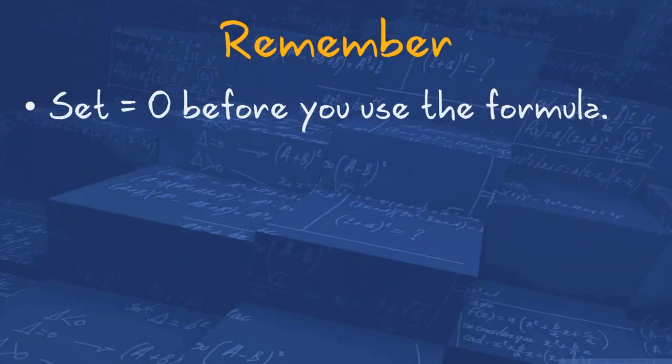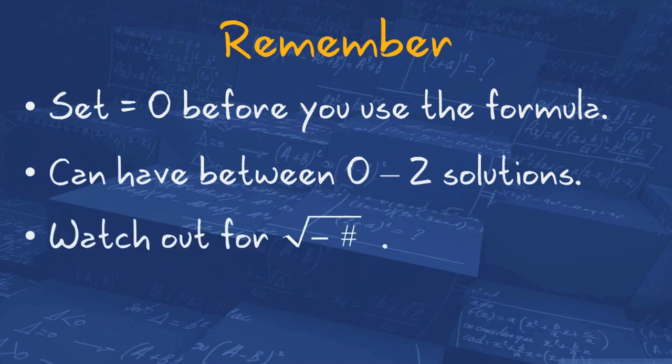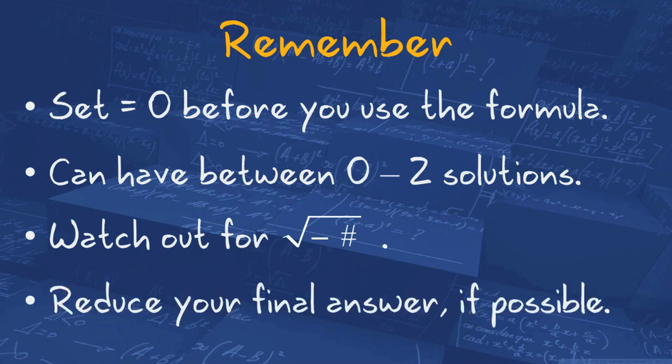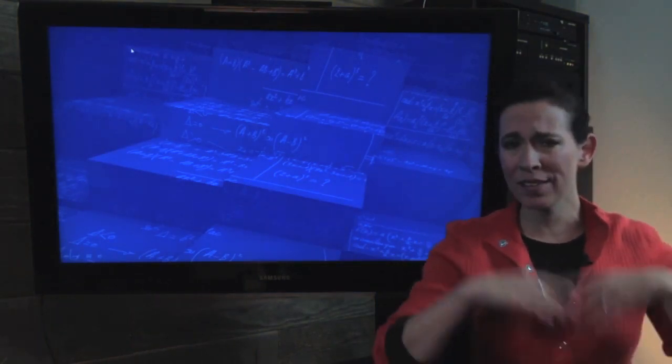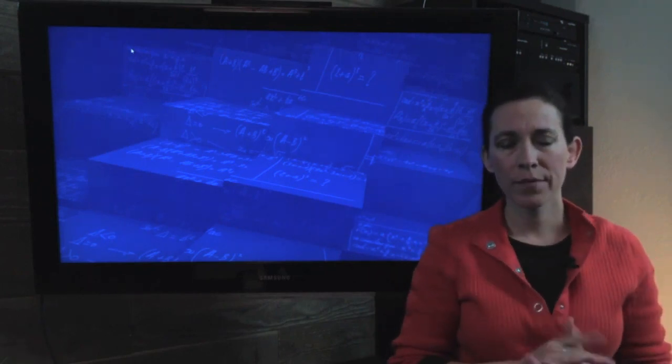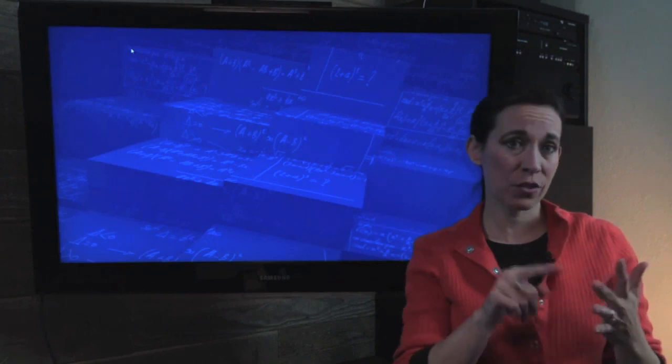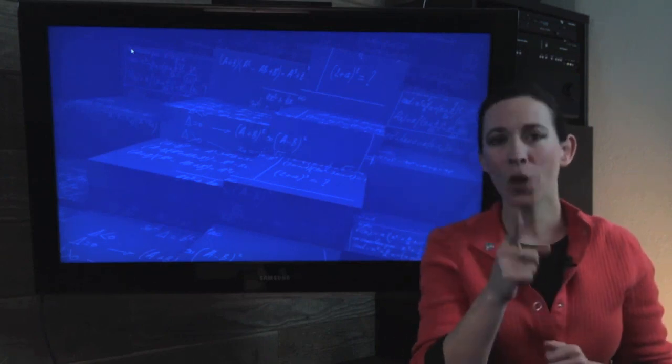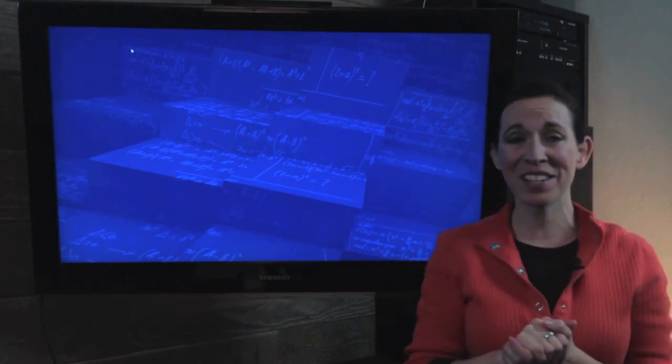So remember, set it equal to zero before you use the formula. You can have between zero and two solutions. Watch out for that negative number underneath the square root and reduce your final answer if possible. Okay. Well, thanks for watching. I hope you guys enjoyed it. Don't forget you have a lot of resources, videos, teachers, friends, tutors. Go ask for help. Don't let your pride keep you from passing. You're not alone in this. We'll see you guys again soon.